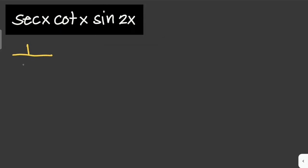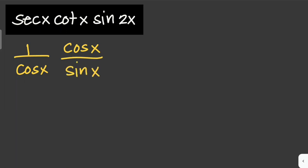We can write sec(x) using the reciprocal identity as 1 over cos(x), and cot(x) can be written as cos(x) over sin(x). sin(2x) is a double angle, and by the double angle identity, sin(2x) equals 2·sin(x)·cos(x).